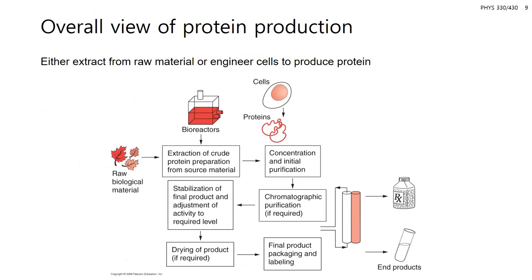The limit of peptide synthesizers is around 70 amino acids. This limit exists because once peptides get too long, you get conformational changes and crowding that limits the access of incoming amino acids to the peptide on the solid-phase support. So if you want to work with something larger than 70 amino acids, you'll have to move to protein production.